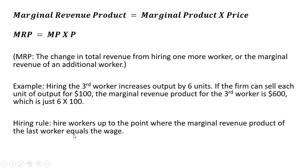The hiring rule: to find the optimal number of workers to hire in order to maximize profit, we keep hiring workers up until the point that the marginal revenue product of the last worker equals the wage we pay that last worker. So marginal revenue product equals the wage.